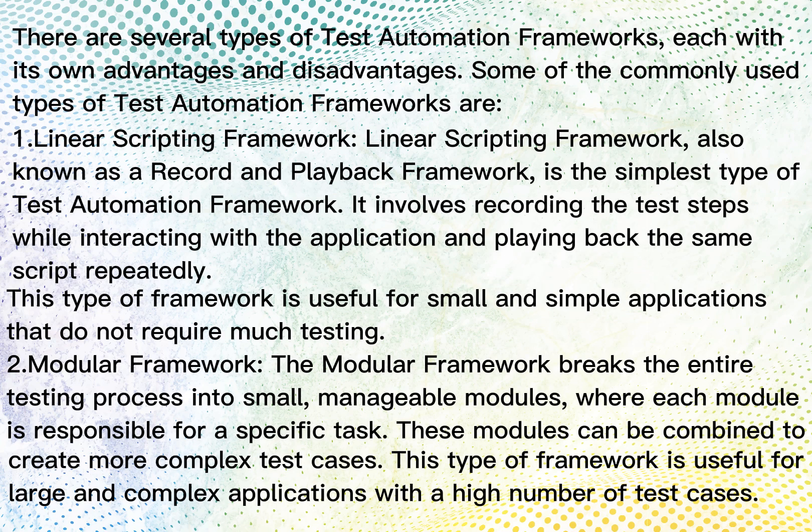There are several types of test automation frameworks, each with its own advantages and disadvantages. 1. Linear Scripting Framework: Also known as a record and playback framework, it is the simplest type of test automation framework. It involves recording the test steps while interacting with the application and playing back the same script repeatedly. This type of framework is useful for small and simple applications that do not require much testing.